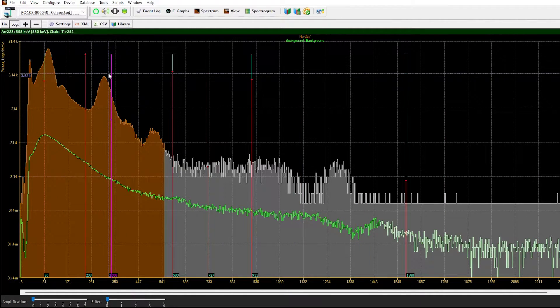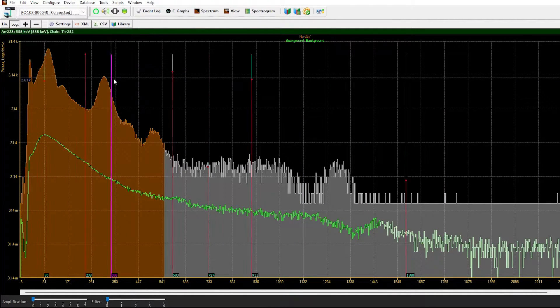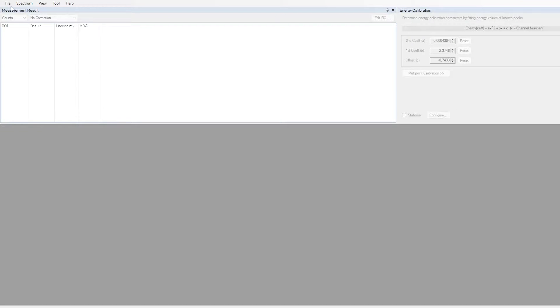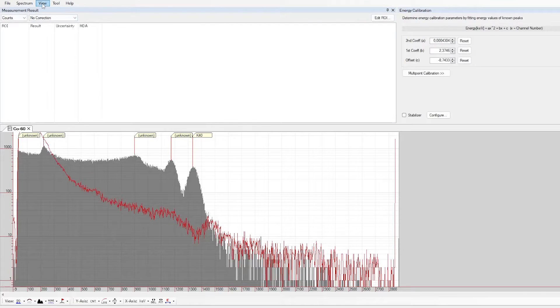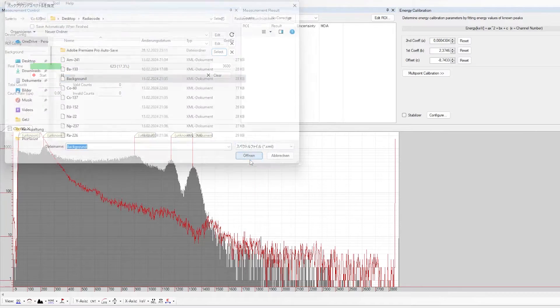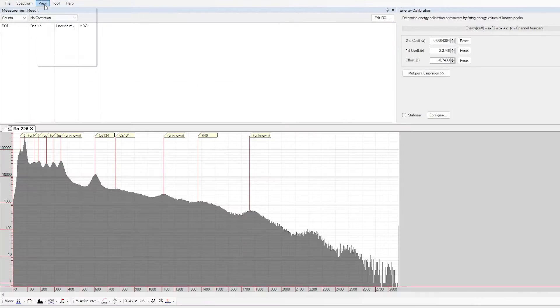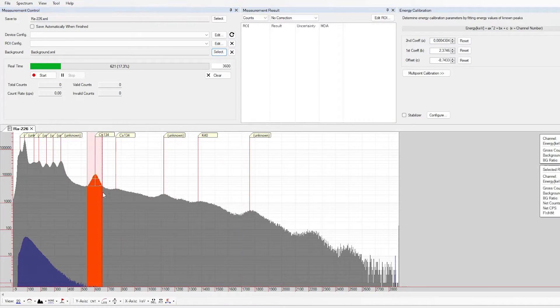I wanted to determine the efficiency and for that I need to mark a region of interest. This is something you need another free software for, Becquerel Monitor. Simply load in the XML files and off you go. I did that for every isotope I had data for and had to calculate the activity on the measuring day. And these are my results.